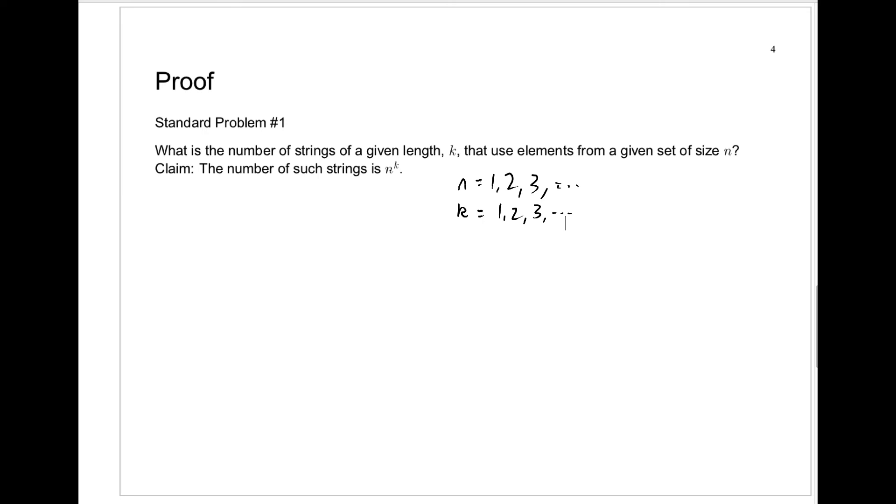And of course, this is really an infinite number of claims because you can pick all sorts of different n's and all sorts of different k's. So the idea behind the mathematical proof is that we can prove that no matter what n and k are, this is the right answer.